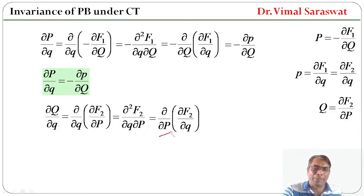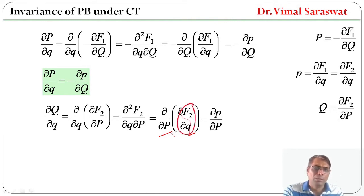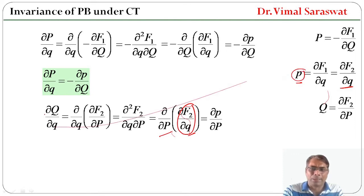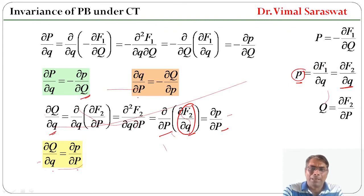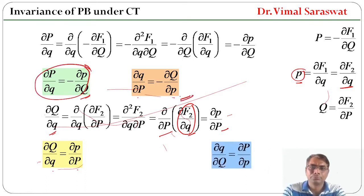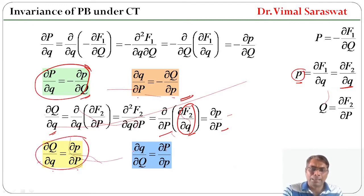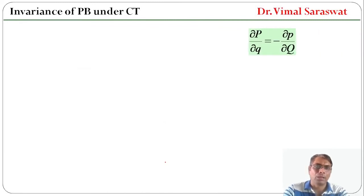This equals del/del P of (del F2 / del q). And del F2 / del q equals small p, so del Q / del q equals del p / del P. From here, del q / del P equals minus del Q / del p, taking the reciprocal. In the same way, del Q / del q equals del p / del P. Now del p / del q is this expression, and del Q / del q is this expression.